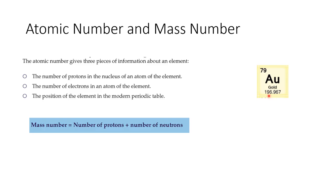The larger number is the mass number — the mass of an individual atom of gold. The mass of any atom is made up of the number of protons plus the number of neutrons that are in the nucleus. So, the mass number equals the number of protons plus the number of neutrons. We can work out the number of neutrons by taking the mass number and subtracting the atomic number. The mass number is often not a whole number, and this is because elements can have what are called isotopes.